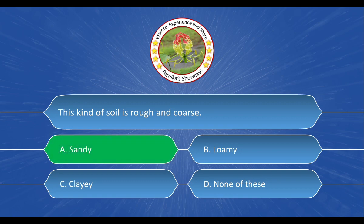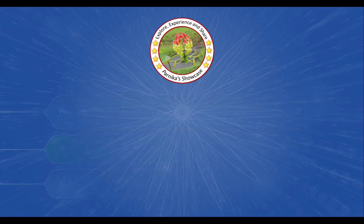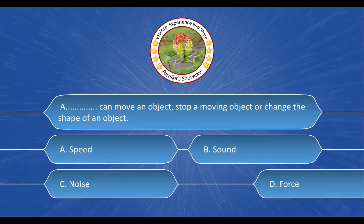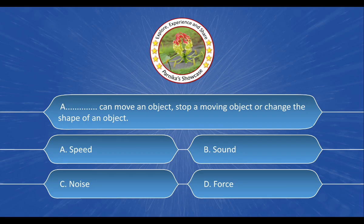This is a blank that can move an object, stop a moving object, or change the shape of an object. And the options are A. Speed, B. Sound, C. Noise, D. Force. And the correct answer is option D, Force.